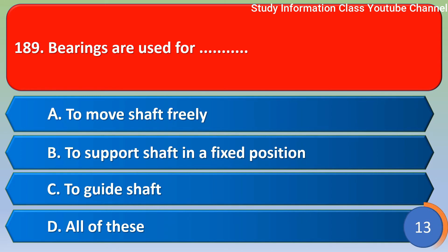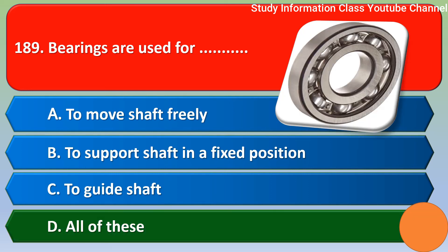Next question: bearings are used for — option A to move shaft freely, option B to support shaft in a fixed position, option C to guide shaft, option D all of these. The correct answer is option D — all of these.